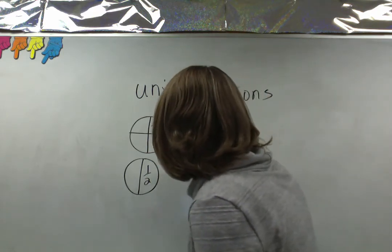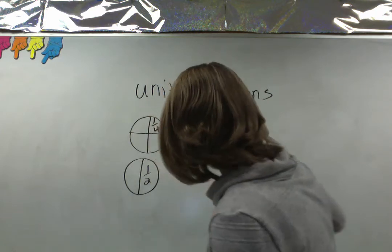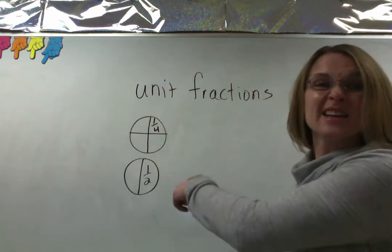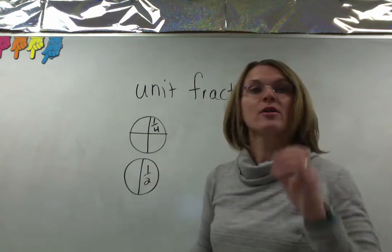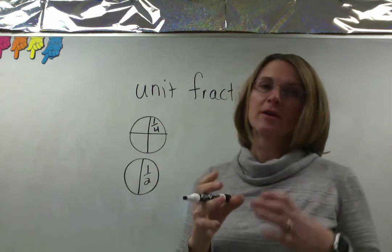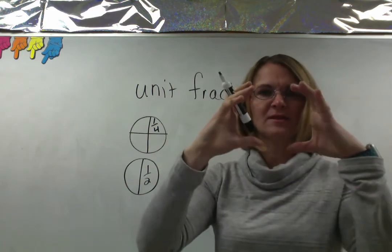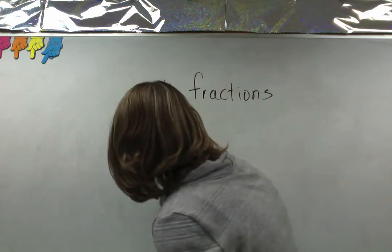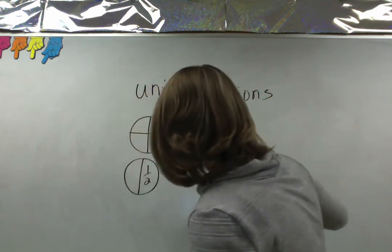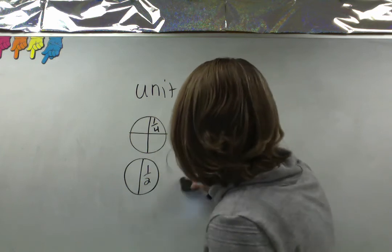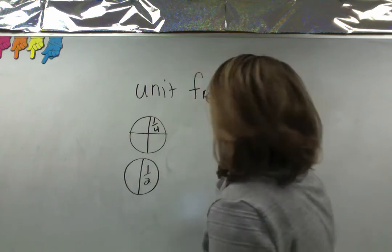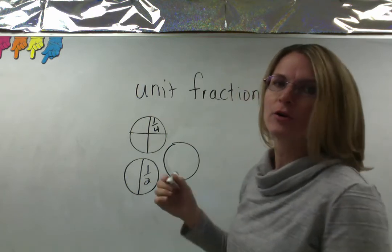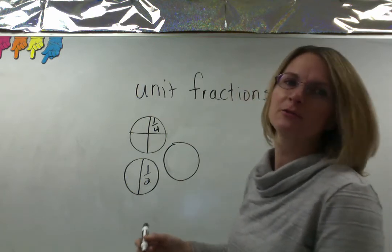We might as well throw a third in there — except in a circle. When you're comparing fractions, they have to come from the same size whole. My circle wasn't as big as the other circles, and it's really hard to make them all the same size when you're drawing. That's why sometimes it's better to know mathematically which one's bigger.